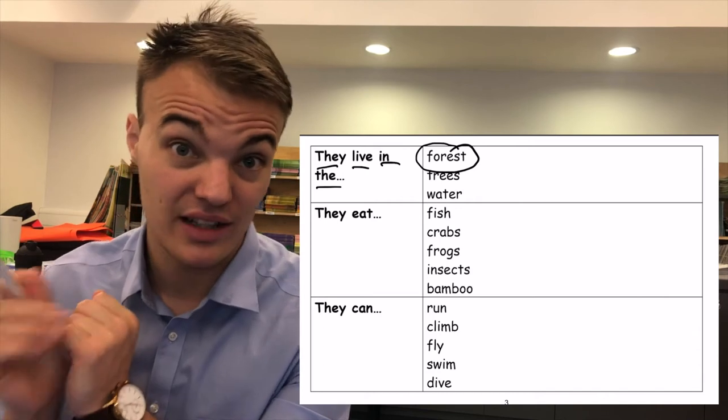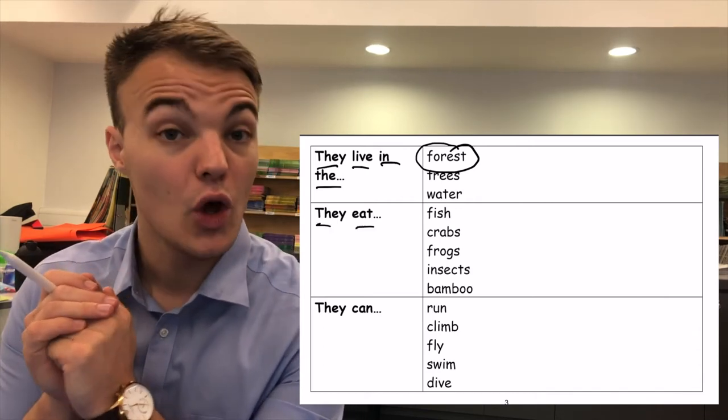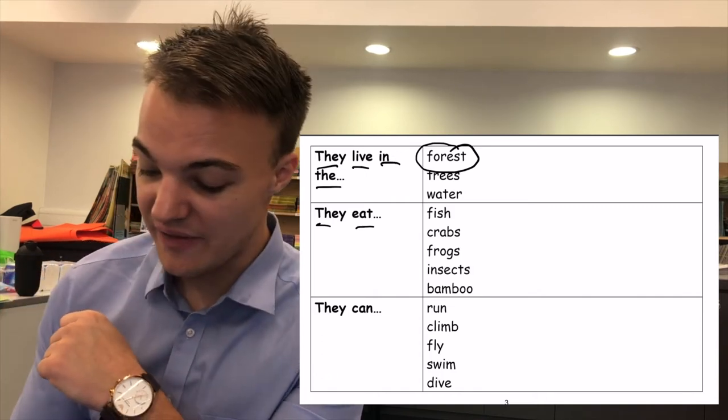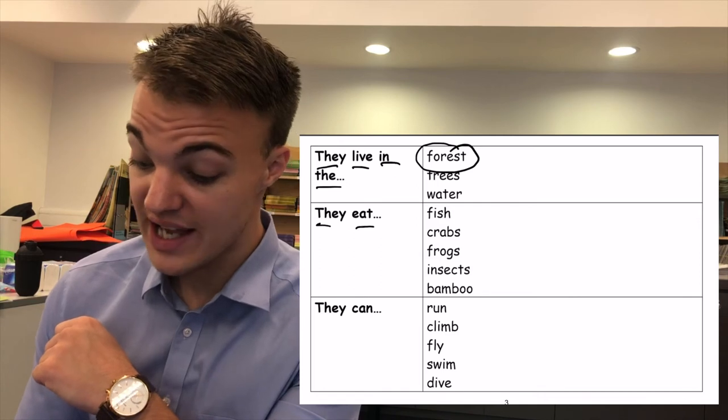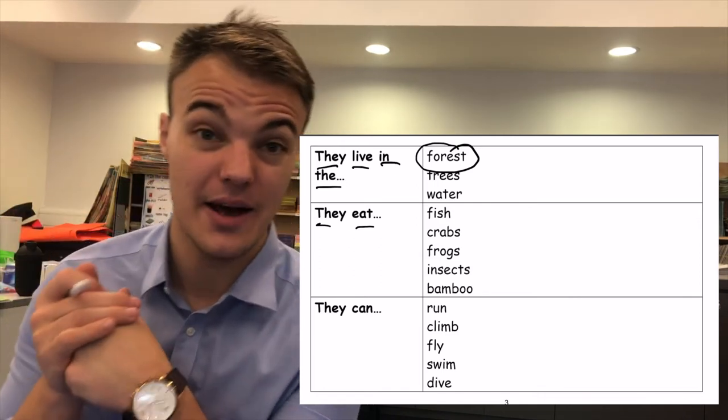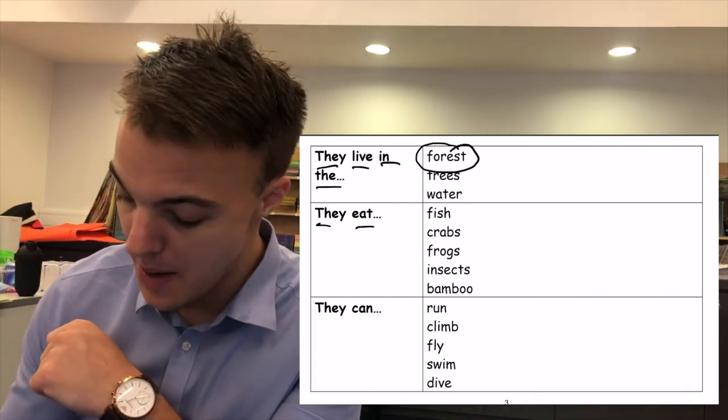The next part says they eat. P1, what do lions eat? They don't eat fish, crabs, frogs, insects or bamboo. So I need to write a word here. And I know that lions eat meat.